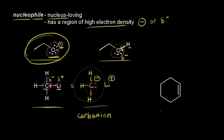Finally let's look at cyclohexene. Cyclohexene has a pi bond, so let me show the pi bond here. Pi bonds are regions of high electron density, so this pi bond can act like a nucleophile in an organic chemistry mechanism.